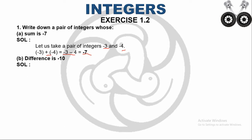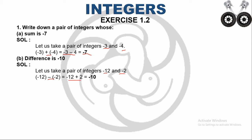The second sub-question: difference is -10. Difference means subtraction. We need a pair of integers whose difference is -10. For example, take -12 and -2: minus 12 minus minus 2. Since 2 operators are together, I change the sign, giving minus 12 plus 2. The 2 integers have different signs, so we subtract: 40 minus 10 is 30. The biggest number has a negative sign, so the answer is -10.